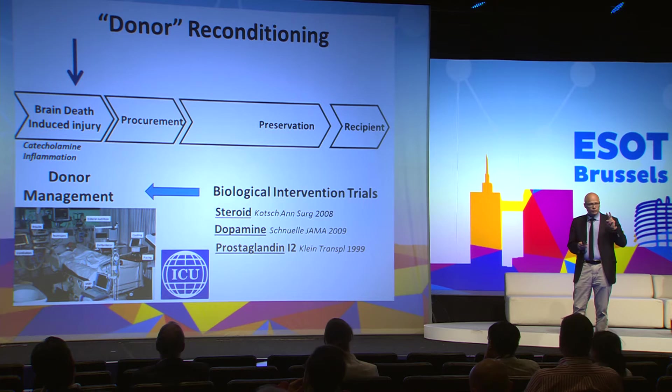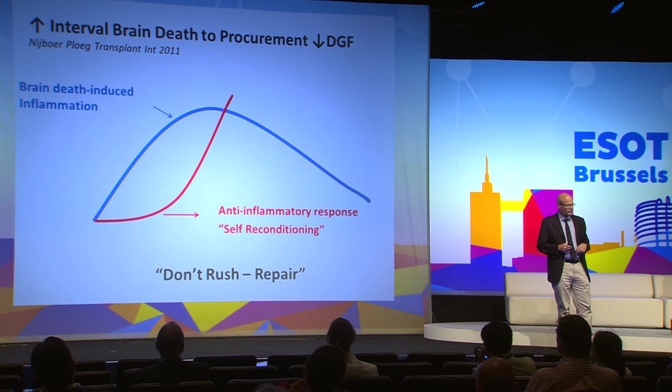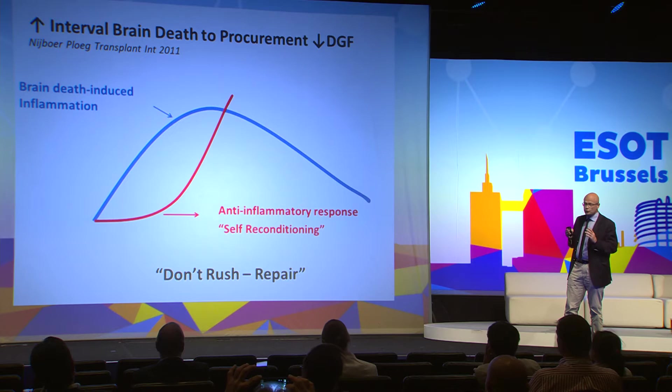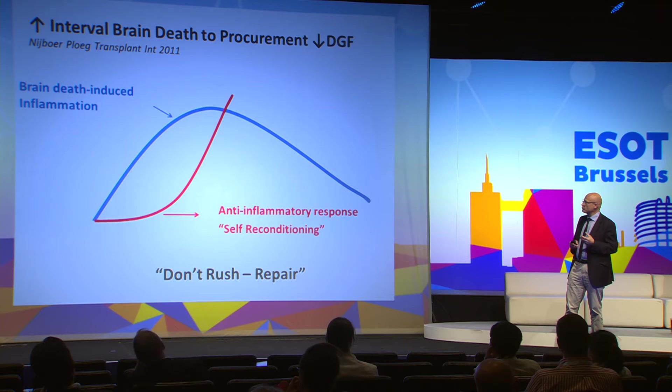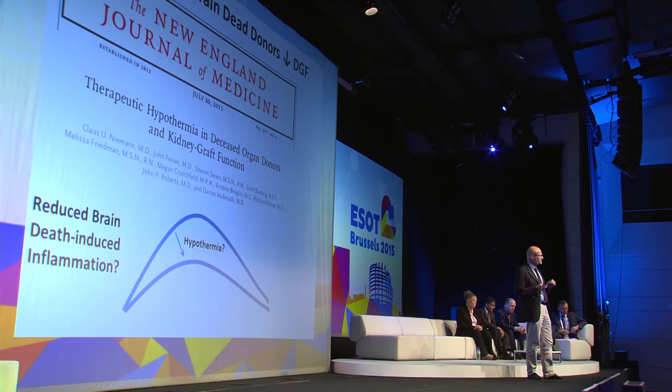Just to list a few: steroids and dopamine. On reconditioning the donor, I want to make two points. First, there has been this quite important observation that an increased interval between brain death and procurement may in fact lead to less delayed graft function after transplantation. It seems that some mechanism of inflammation triggered by brain death can be inhibited by a sort of self-reconditioning, and so waiting — not rushing — may be preferable to rushing to the OR.